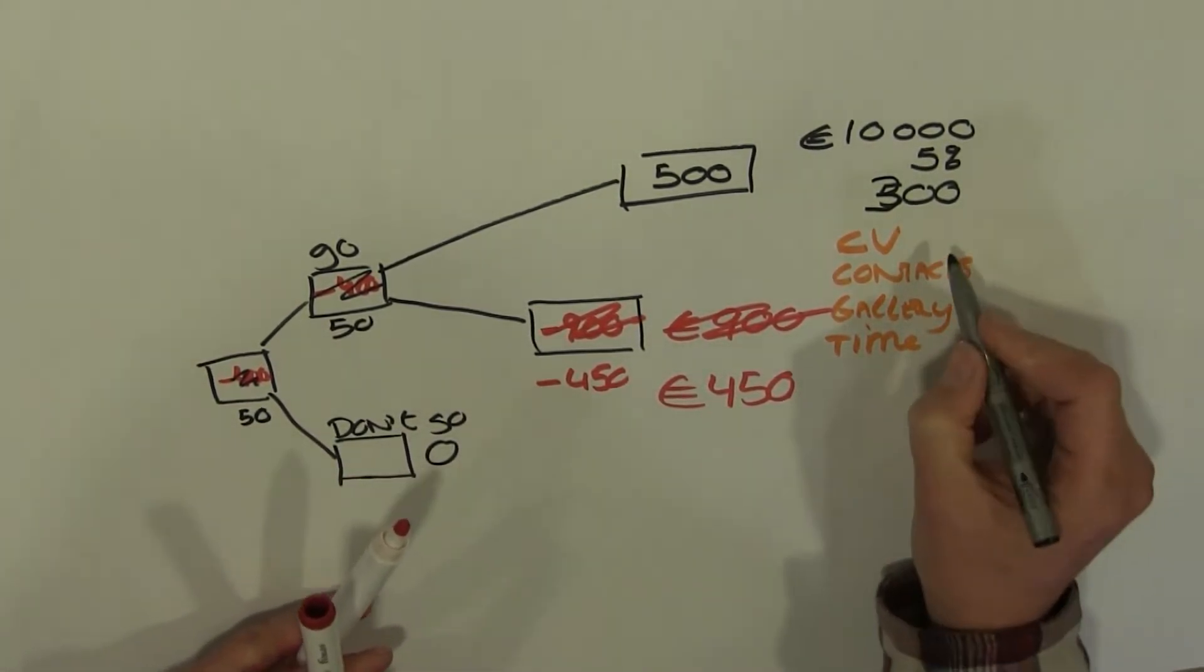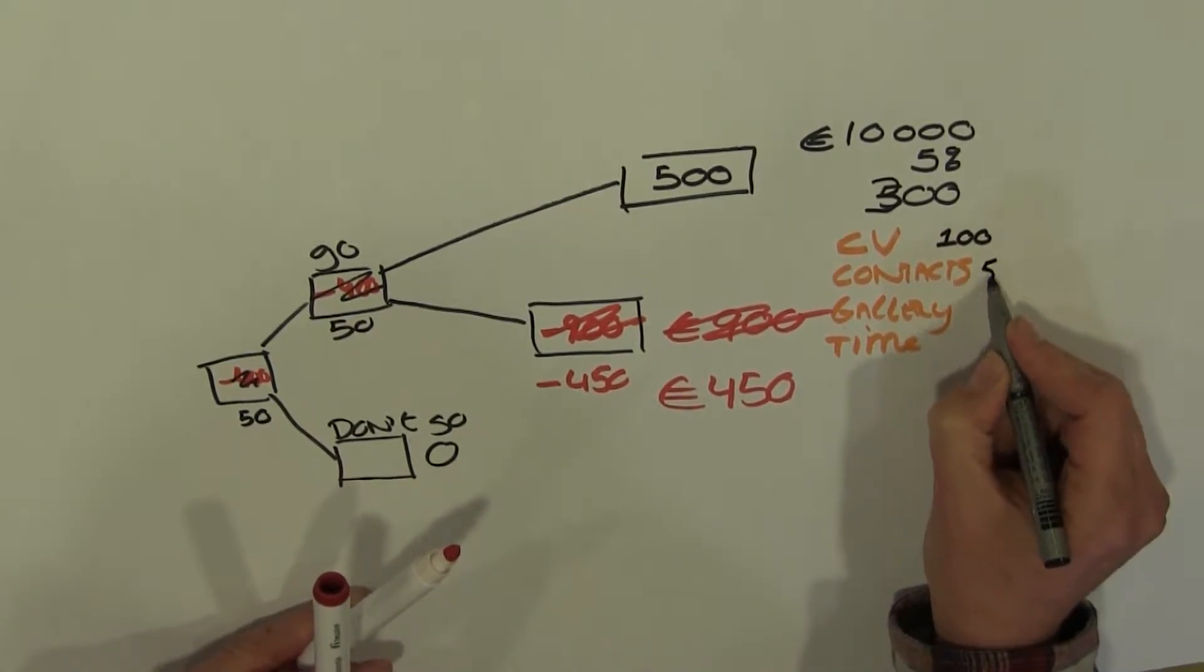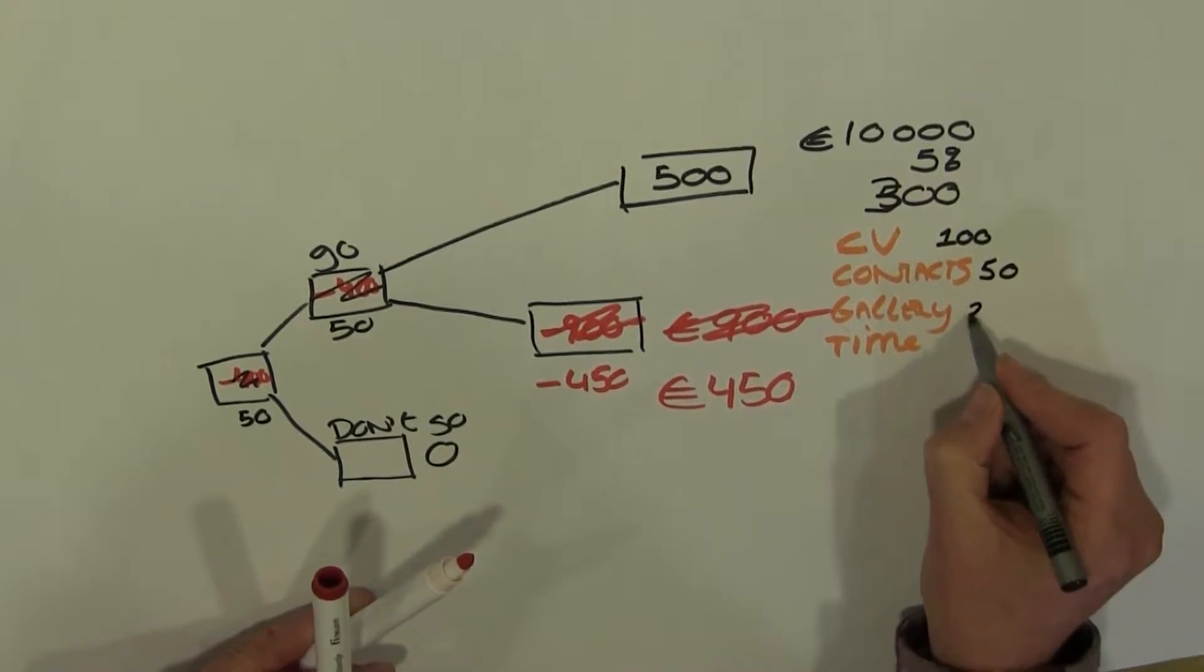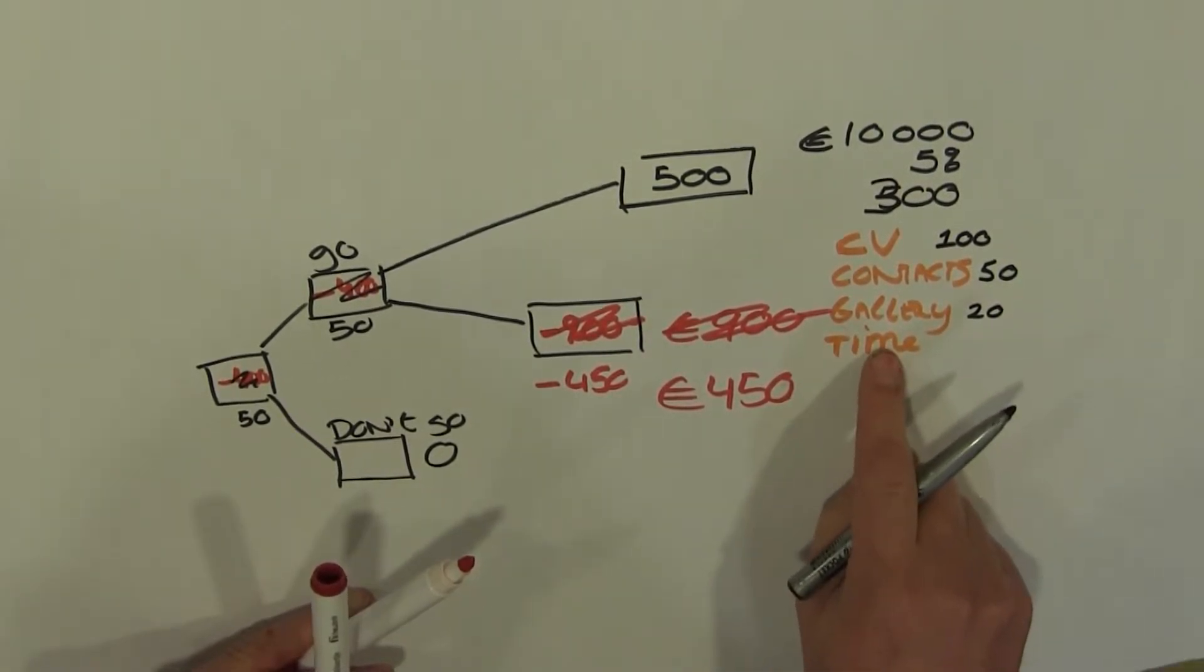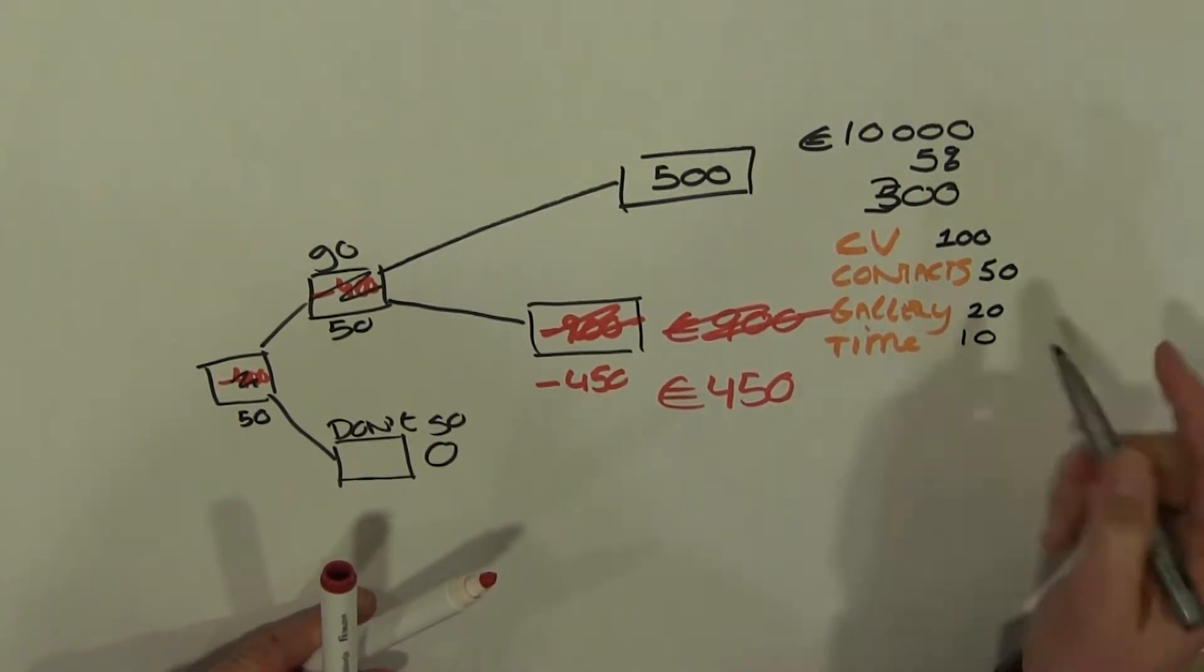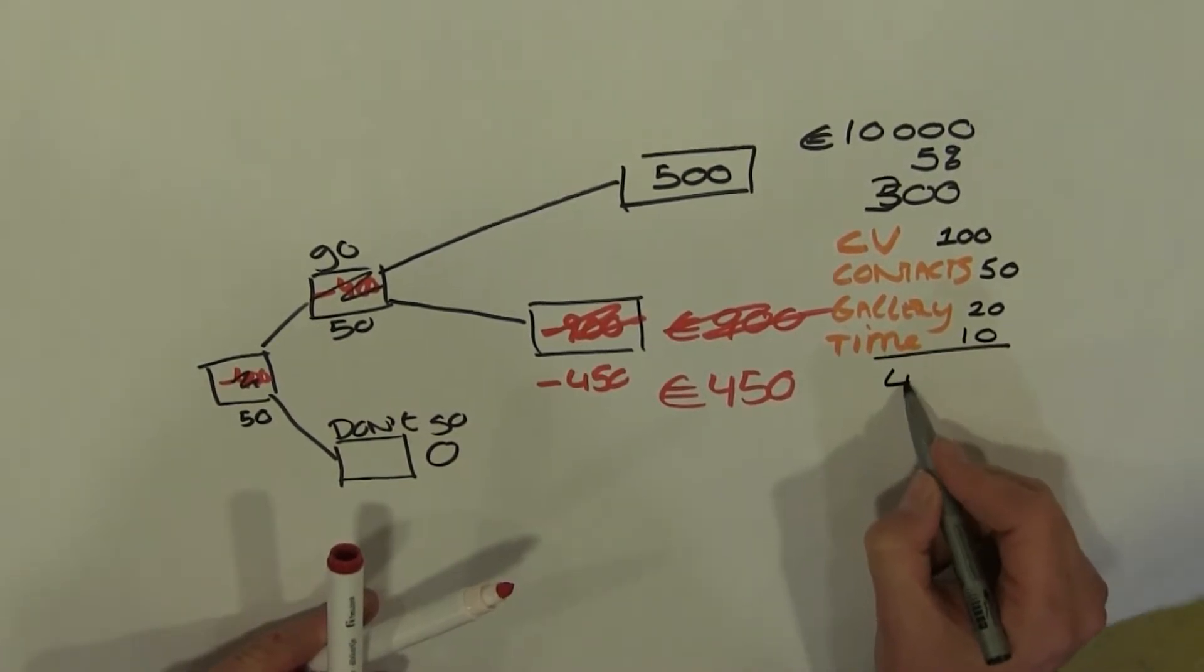And I should give that some kind of figure as well. For my CV, I would give 100. To increase my contacts, I'll give that 50. The chances of meeting another gallery, I'll keep that quite small, 20. I might have a good time. Yeah, why not. Then I'm going to add those up.